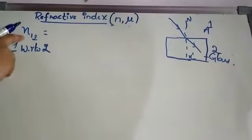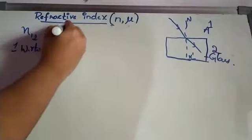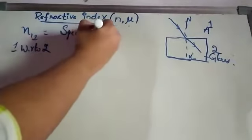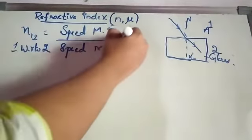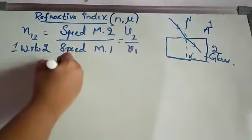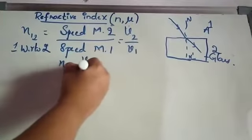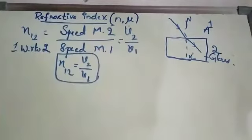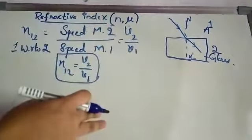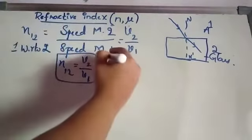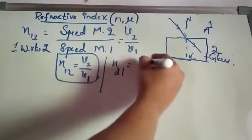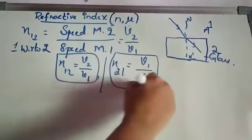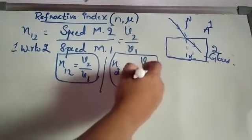If I want to write refractive index of medium 1 with respect to medium 2, I have to write speed of light in medium 2 divided by speed of light in medium 1. That is N12 equals V2 by V1. Similarly, refractive index of medium 2 with respect to medium 1, N21, is V1 by V2 — speed of light in medium 1 divided by speed of light in medium 2.